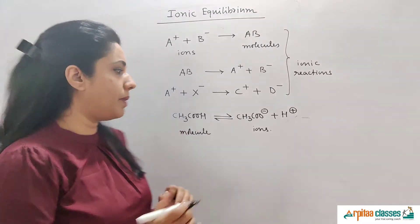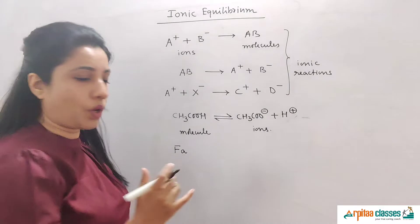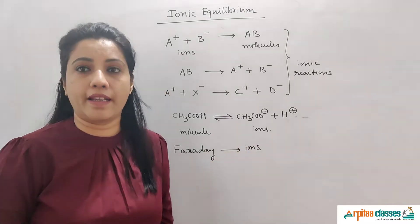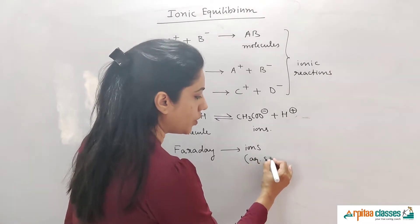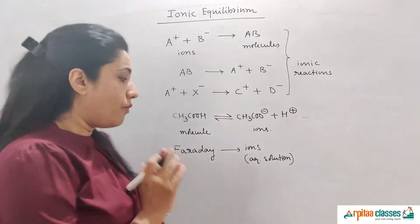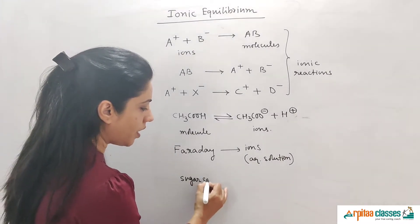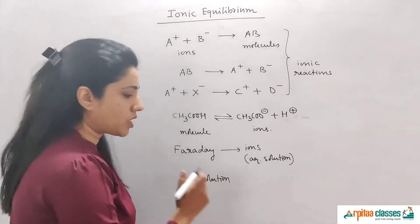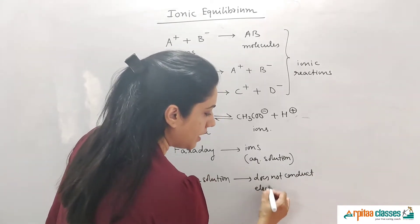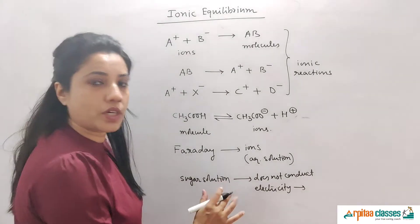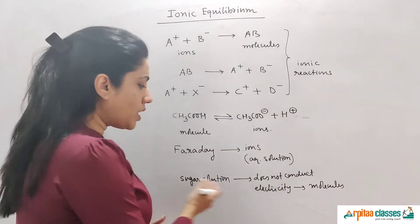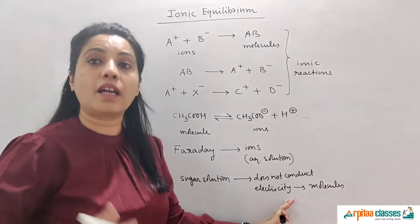The scientist who first gave some contribution on this topic was Faraday. Faraday tried to find out where ions are present — you get ions in aqueous solution when any ionic compound is dissolved in it and gets dissociated. Faraday took sugar solution and dissolved sugar in water, and observed that sugar solution does not conduct electricity. That means there are no ions in the sugar solution, only molecules, since electricity is only conducted when ions are present.